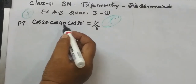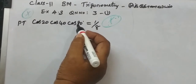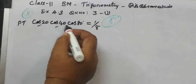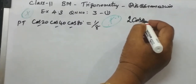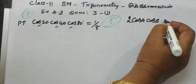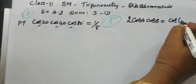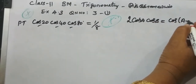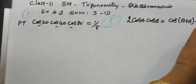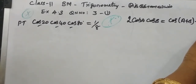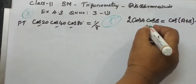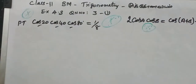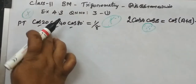Here we have cos 20, cos 40, cos 80. In this, you use the formula: 2 cos A cos B equals cos(A+B) plus cos(A-B). This is one of the most important formulas used in this question.